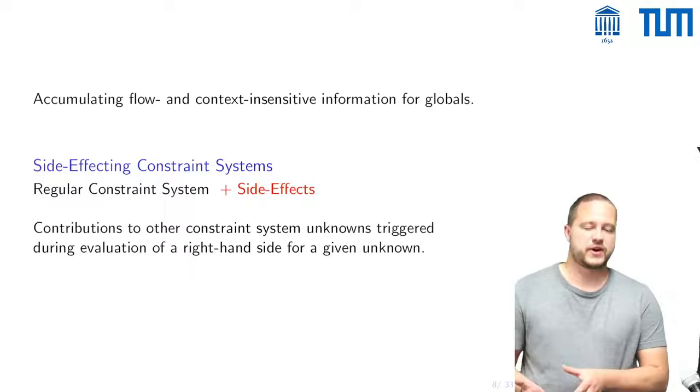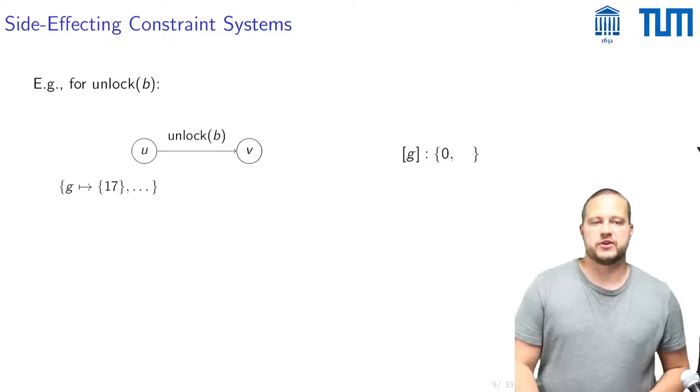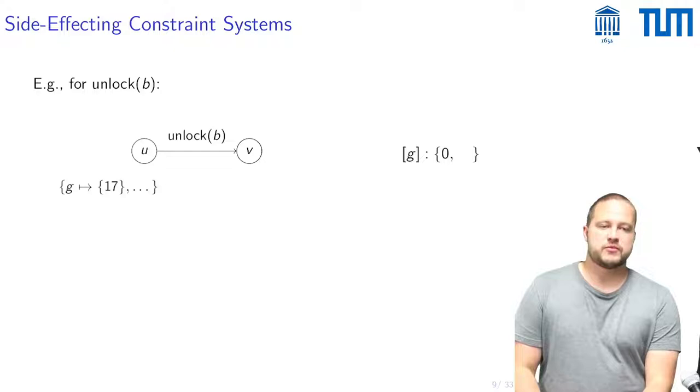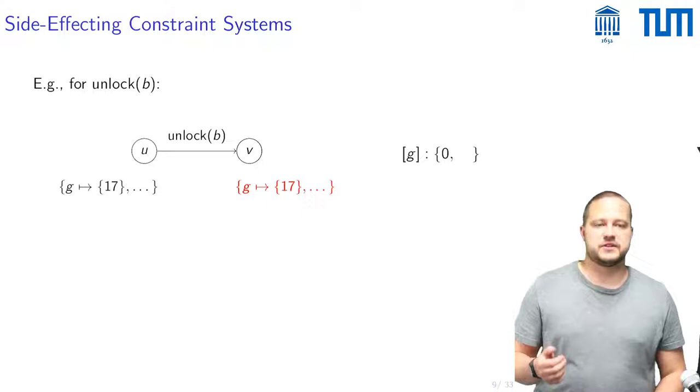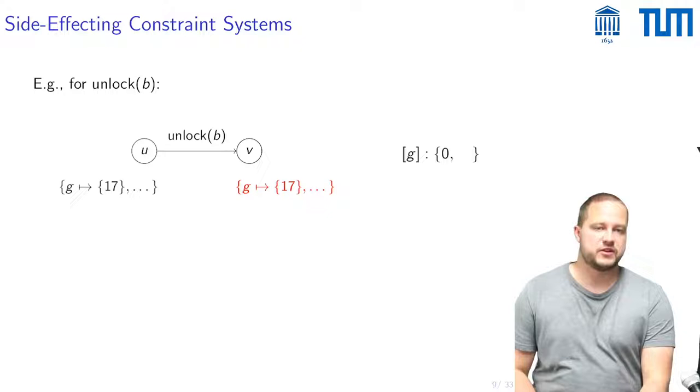So to go back to our example we had the situation where in the local state we had this value of G is 17 and we did an unlock B. So what we would do here is when we compute the local state of the successor, in this case it would stay the same and then the side effect was that we also side effected this value of 17 to this unknown G. So this would be the side effect here.